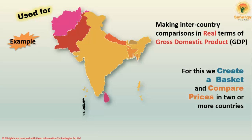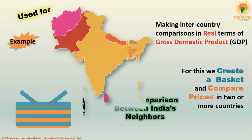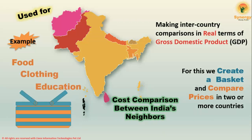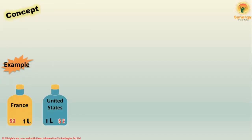As an example, we can compare the cost of various items between India and its neighbors. We can compare spending on food, clothing, education, and so on — that is, how much it would cost in India versus how much it would cost in Nepal, Bangladesh, or Sri Lanka.